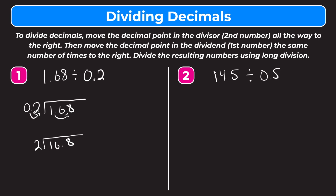Now we just go through the long division like we would normally. How many times does two go into one? It doesn't, so let's move over to the six. How many times does two go into sixteen? That would be eight times. We put the eight over the six. Eight times two is sixteen. Subtract — sixteen minus sixteen is zero. Bring down the eight. How many times does two go into eight? That's four. Four times two is eight. Subtract — zero. We bring the decimal point straight up, so our answer is eight and four-tenths.